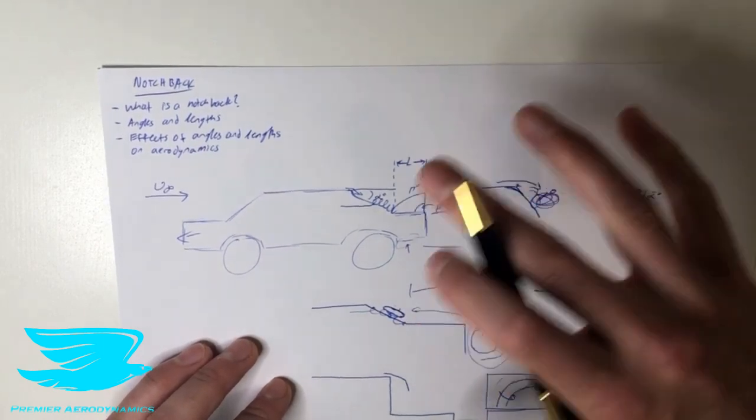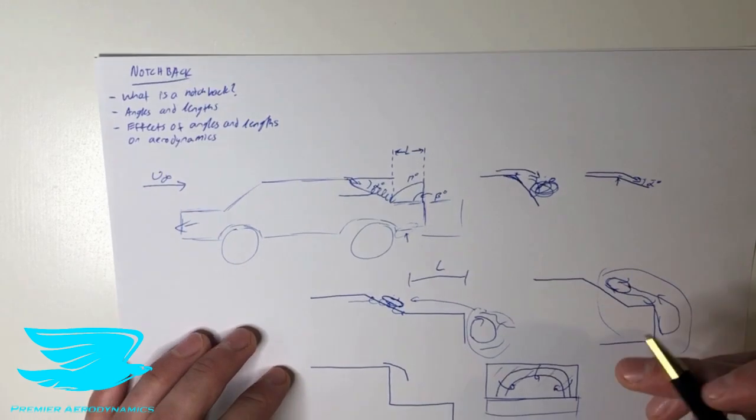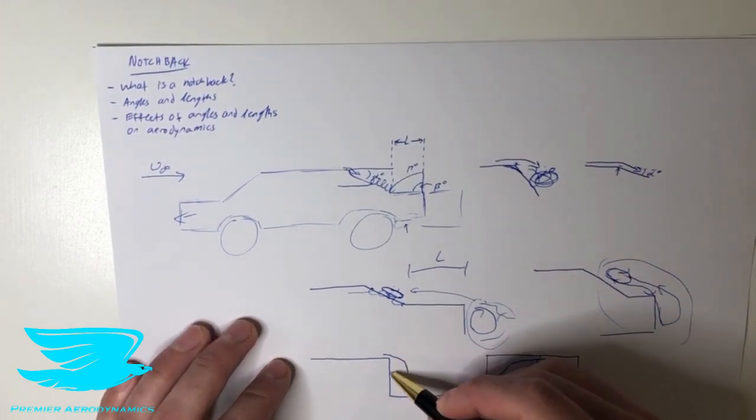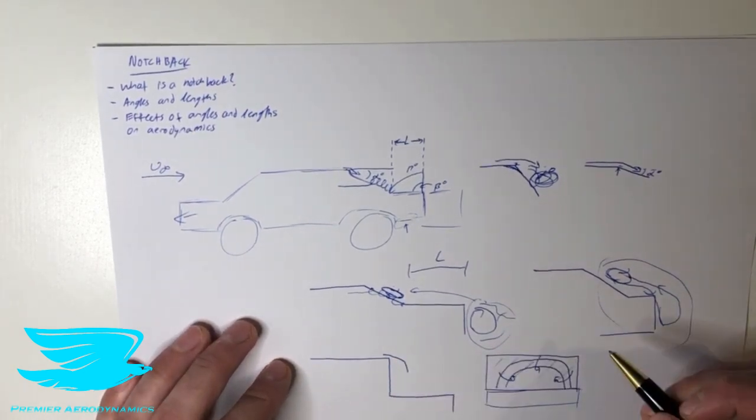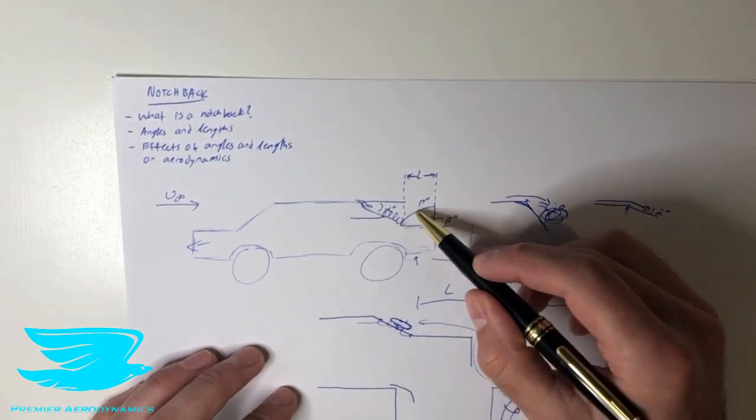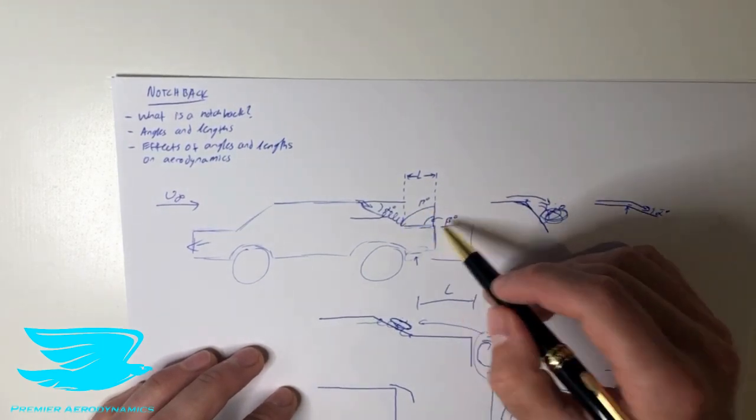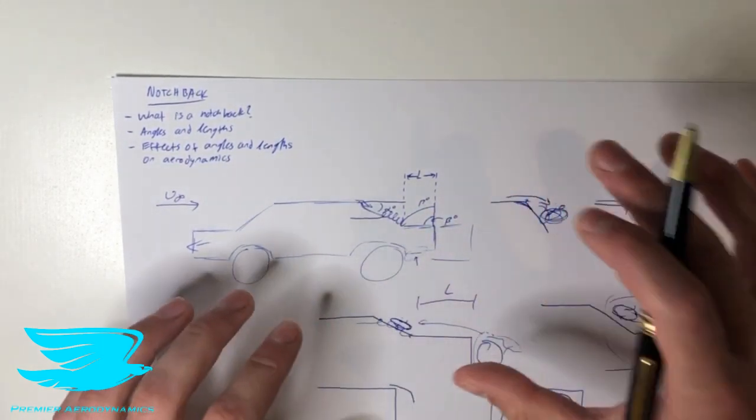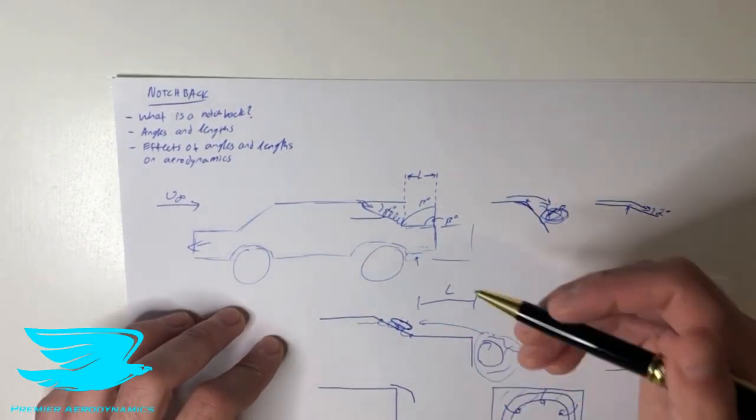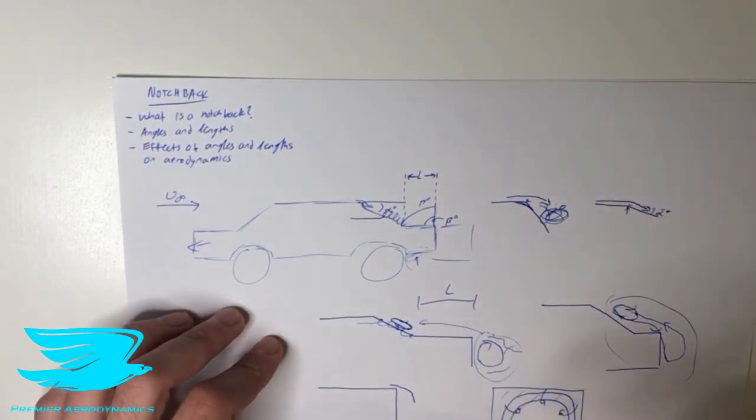The length of the back also determines whether the wake in the back will join up with the wake from the backlight if we do have one. Hopefully we don't, but sometimes we do. And also this backlight angle determines, again, this wake size and the boot angles and the boot backlight angles. That can affect significantly the lift being produced of the car as well as the drag and also how well this diffuser section can work.